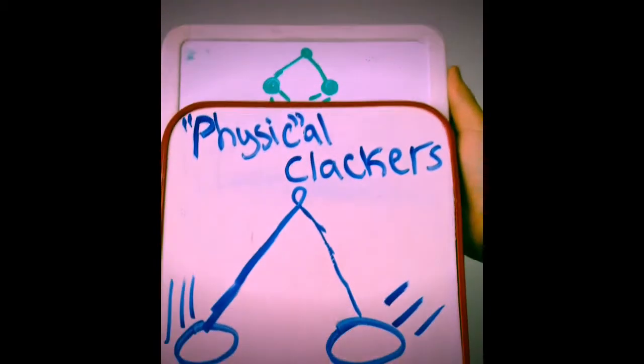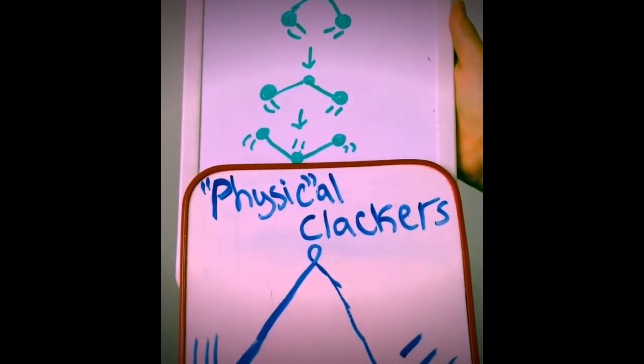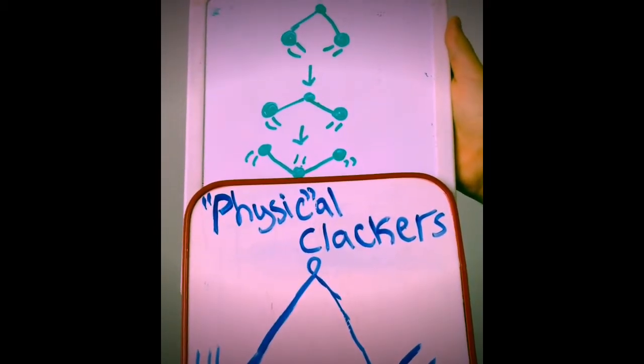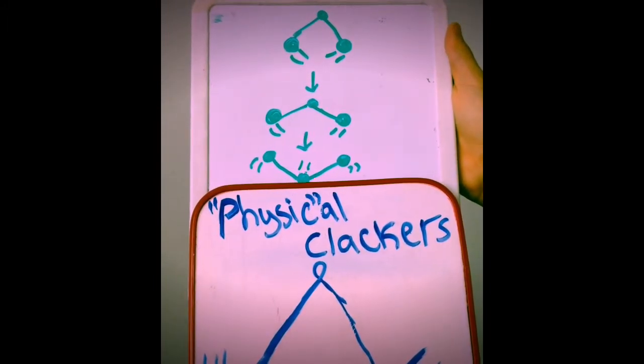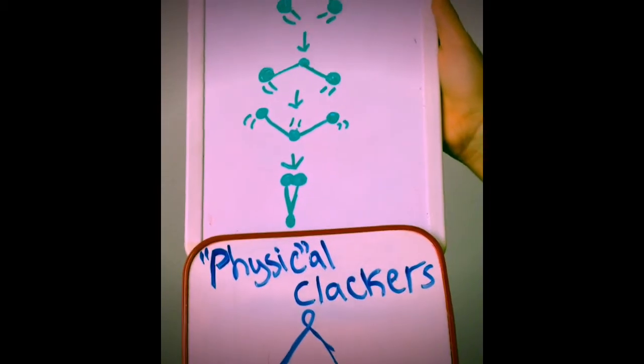If the clackers are already in motion moving up and you move the string down, what happens is you increase the tension on the rope for each ball. This creates a force which accelerates the clackers quicker towards each other.